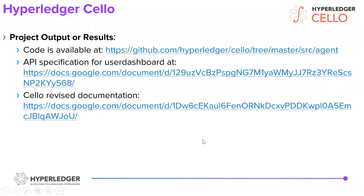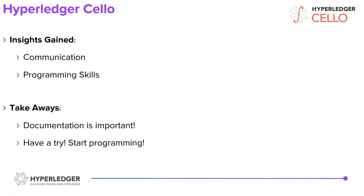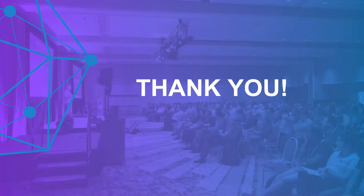One thing I've learned is to communicate with the mentors. For Hyperledger we have weekly meetings, and it's always helpful to work with Baha to revise the documentation and implement according to the documentation. The more time a developer spends on documentation, the easier the implementation work becomes. I have also sharpened my web development skills in Django and Flask. So the takeaways are: documentation is important, and you can start programming. Thank you.